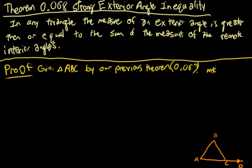measure of angle A plus measure of angle B plus measure of angle ACB is less than or equal to 180 degrees.